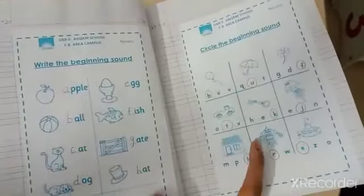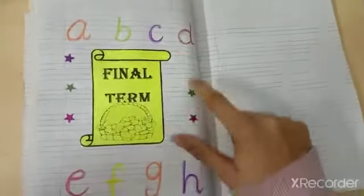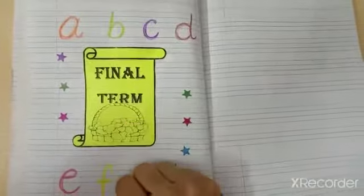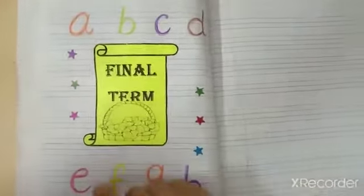Now turn over the page. After this work what you have to do, you have to take out new page and you have to make this title page for final term. Okay students, you have to make this page very beautiful.